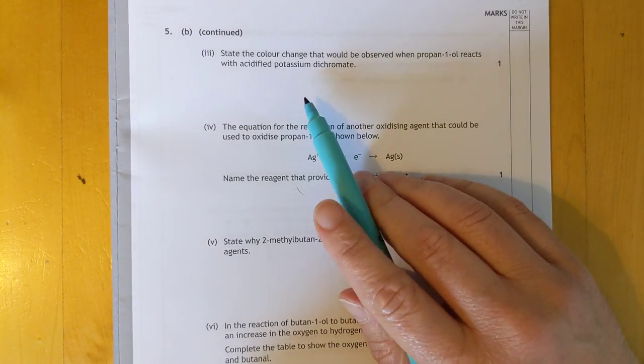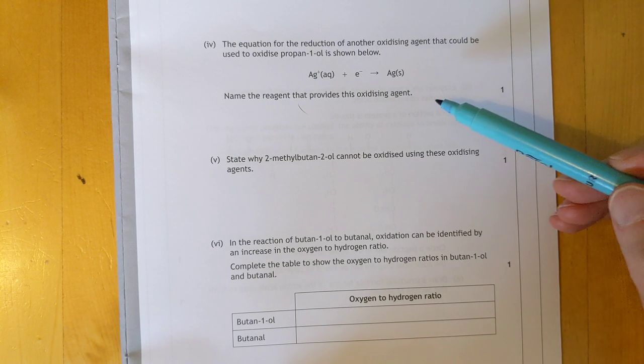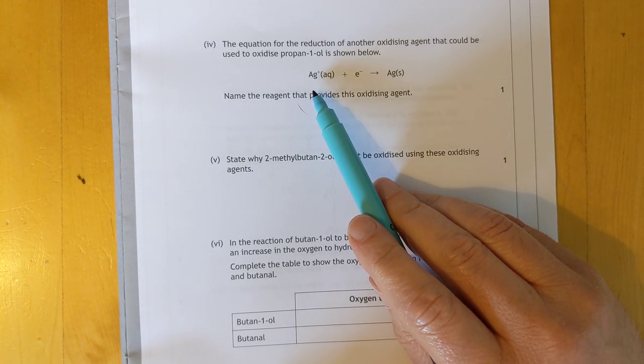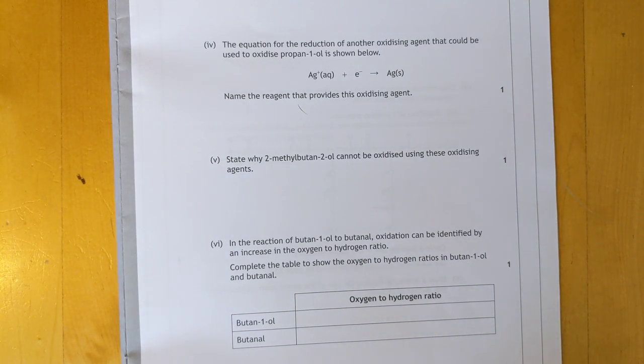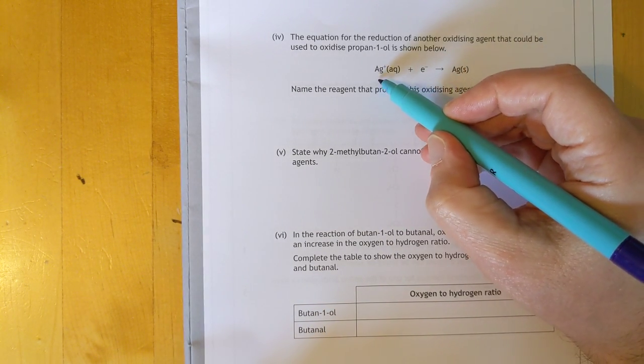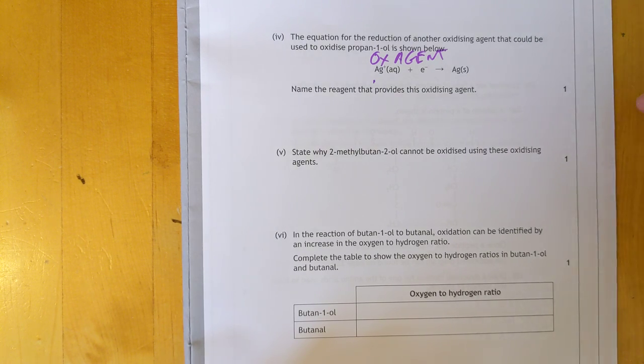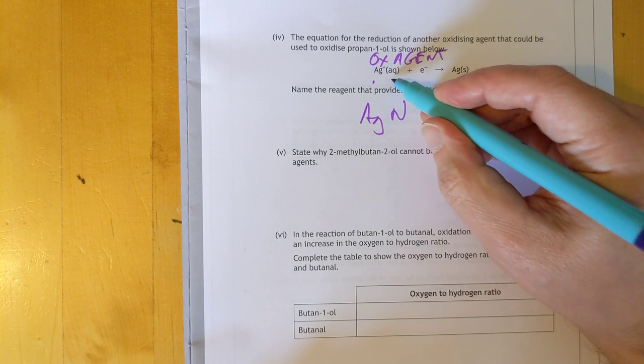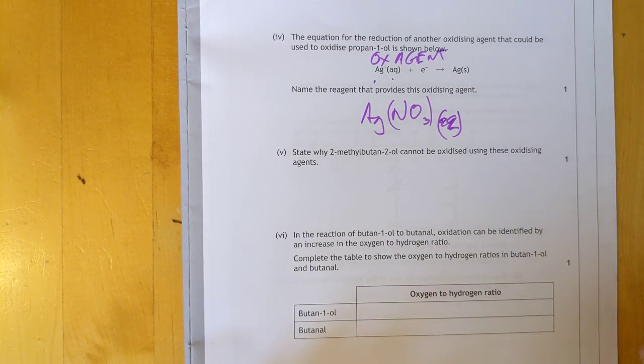Suggest why the potassium dichromate must be acidified. Because you need 14 hydrogen ions for every one dichromate ion. You need a bucket load of hydrogen ions. That's why you need to acidify it. That's my new SI unit, a bucket load. Color change. Acidified potassium dichromate goes from orange to bluey green. You just need to know that. Name the reagent that provides this oxidizing agent. Oxidizing agents get reduced, so this is your oxidizing agent. The silver ions. Are they looking for a chemical that gives you silver ions? Like silver nitrate? It would have to be silver nitrate, because it's soluble and it's AQ.